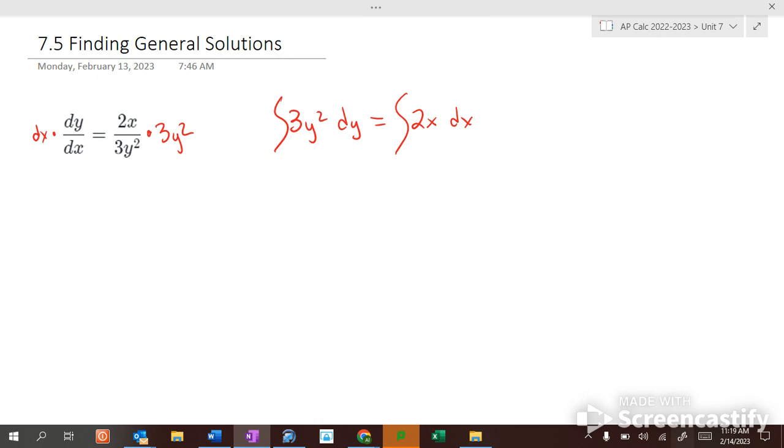So now we're going to integrate each side. So 3y squared dy, what does this become? If we integrate this, y cubed equals x squared plus c because it has to have a plus c because we're not, we don't have numbers.